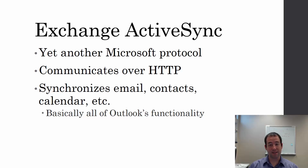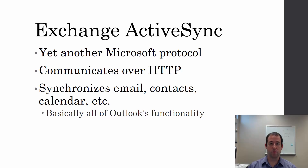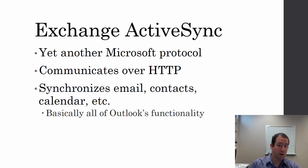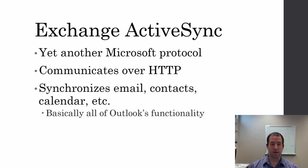A big one now is Exchange ActiveSync, which is important if you're using Exchange. If your workplace provides an Exchange server, you're likely going to be using Exchange ActiveSync. You can also configure POP or IMAP on Exchange servers to send and receive email, but ActiveSync is the protocol that Outlook uses. It communicates over HTTP — the web protocol — rather than over SMTP, POP, or IMAP, and it synchronizes basically everything: email, contacts, and calendar.